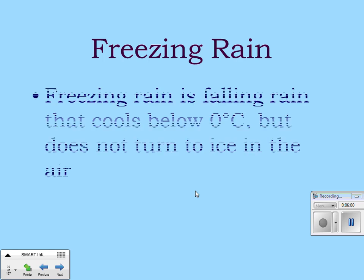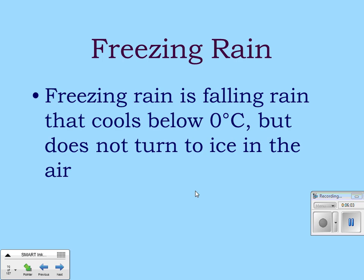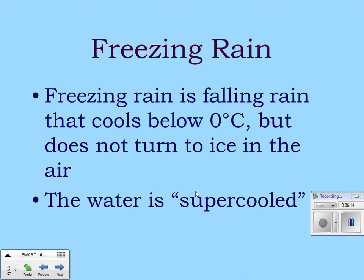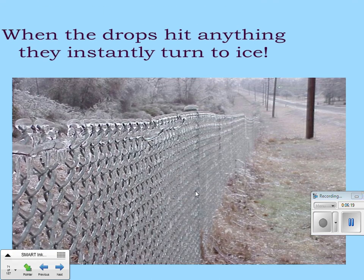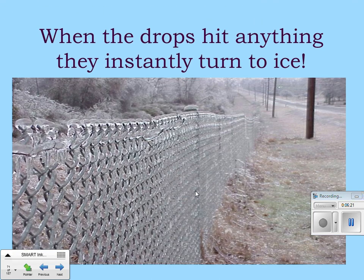Freezing rain is different from sleet. Freezing rain is falling rain that cools below zero degrees Celsius but does not turn to ice in the air — the water is supercooled. When the raindrops hit any surface, they immediately turn to ice. A picture shows a chain-link fence coated in ice after freezing rain — it falls as water but freezes on contact with the fence.